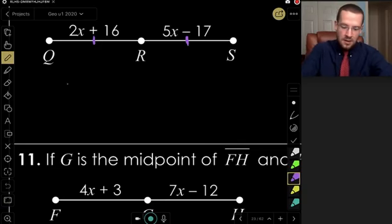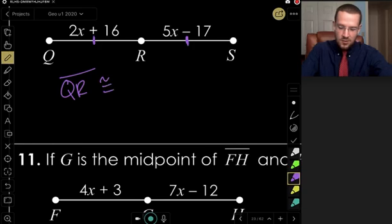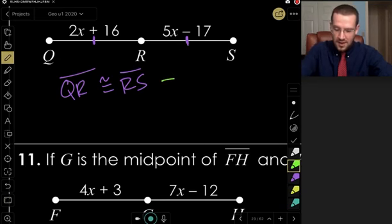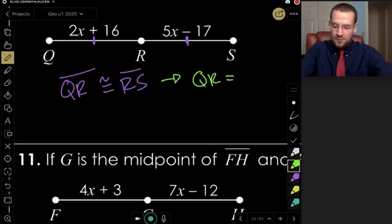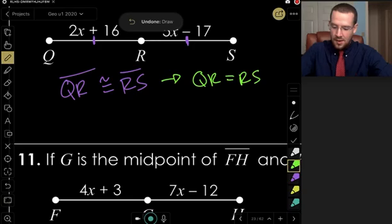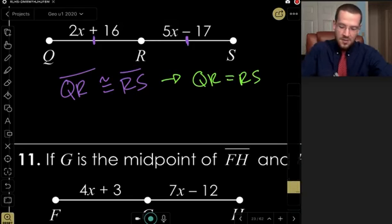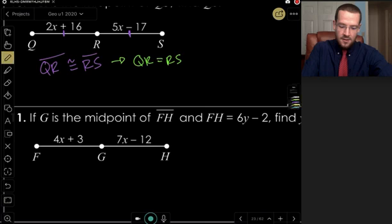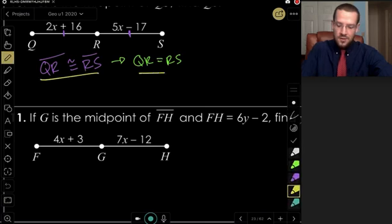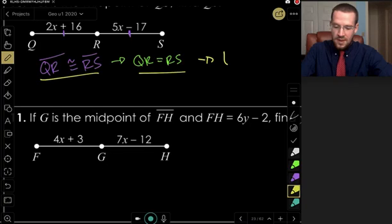Okay, so the two hash marks mean that QR is congruent to RS. And thus, we can conclude that if the two segments are congruent, then their measures are equal. This is RS. And from that, from these two criteria, so congruence, equality, then we can consider that R is the midpoint.